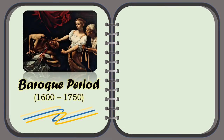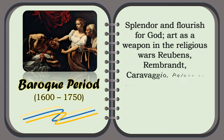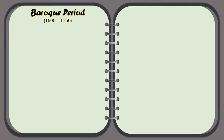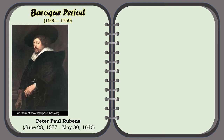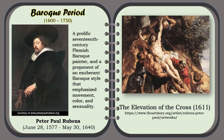The Baroque Period. This period is all about the splendor and flourish for God — art as a weapon in the religious wars. Key figures include Rubens, Rembrandt, and Caravaggio. The Palace of Versailles and the Thirty Years' War between Catholics and Protestants define this era. One of the prominent artists of this period was Peter Paul Rubens, a prolific 17th-century Flemish Baroque painter and a proponent of an exuberant Baroque style that emphasized movement, color, and sensuality. One of his famous artworks was the Elevation of the Cross in 1611.